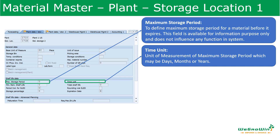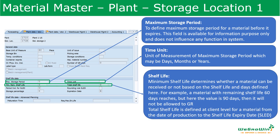In the Shelf Life Data tab, the first field is Maximum Storage Period, which defines the maximum period a material can be stored before it expires. This is available for information purposes only and does not influence any system function. The unit of measurement of time can be days, months, or years. Minimum Remaining Shelf Life defines the minimum shelf life that determines whether material can be received — for example, if the value is set to 90 days but the remaining shelf life is only 60 days from the date of manufacturing, then the goods receipt will not be allowed.